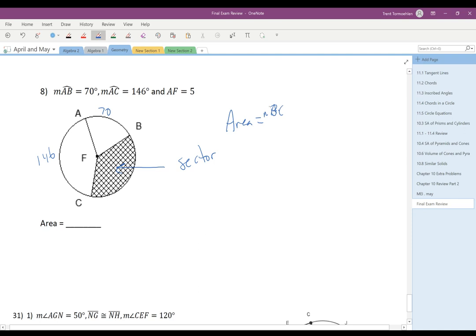it's going to be the measure of arc BC over 360. That gives us what fraction of the circle we're talking about. Then you multiply that times the area of the circle. Since AF is five, that's a radius, you square that to get 25π as the area of the circle.